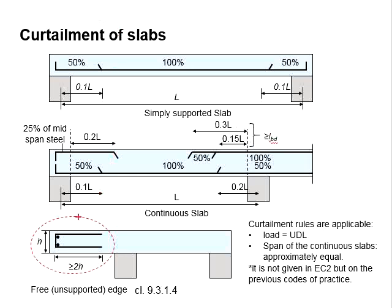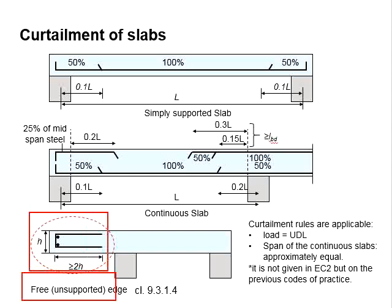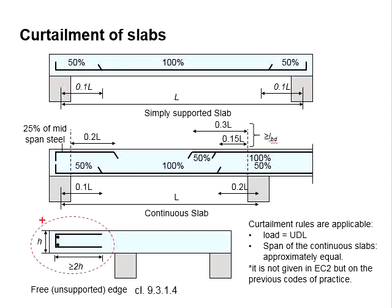When there is a free unsupported edge, reinforcement bars are to be provided with at least an anchorage length of two times the height of the slab for both the top and bottom conditions.